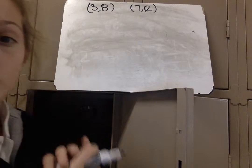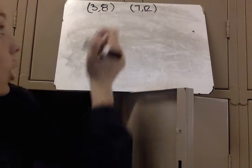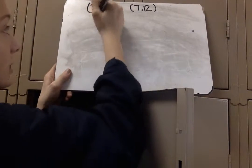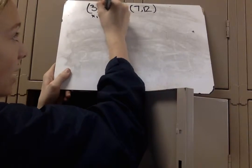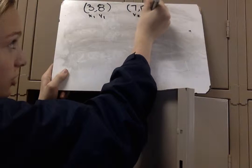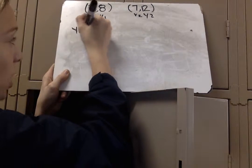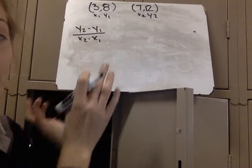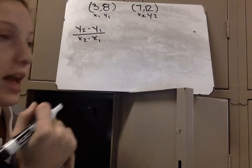We're going to use our information from the last video, which is using the slope formula to find a slope. So we're going to label x1, y1, x2, and y2, and then write out the equation, which is y2 minus y1 over x2 minus x1. We're going to plug in our coordinates for that first.